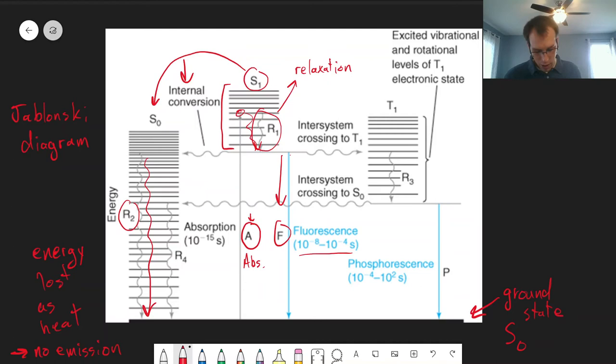Our third possibility is what's called intersystem crossing. The specifics of all this depend on the specific molecule you're looking at. For some molecules fluorescence is the dominant process, for some molecules it's internal conversion, and for others it's this intersystem crossing. It just depends on the details of the energy levels and the properties of that molecule. What intersystem crossing is, is it takes our S1 state and goes into the T1 state, so similar to internal conversion, but we are also flipping a spin.